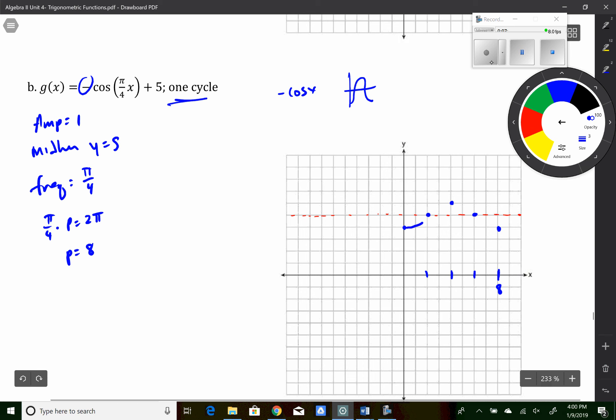And then when I graph it, I just want to make sure it is definitely curved, right? This should be a cosine curve. Again, it's one cycle, so that's it. I am done.